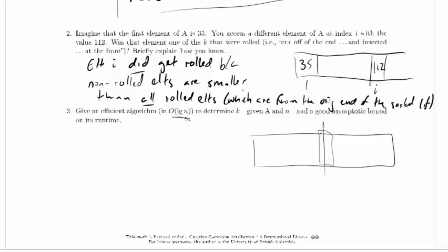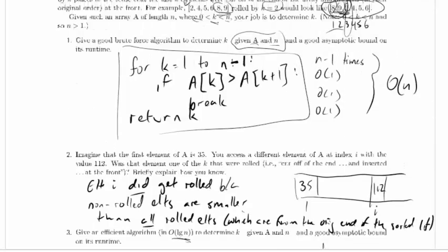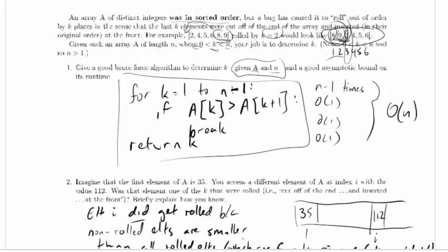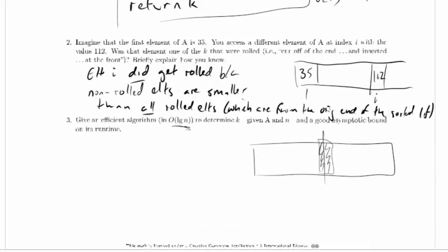One thing we could consider: is the element on the left of our probe greater than the element on the right of our probe? That's similar to the brute force algorithm. If we get lucky we've found the breaking point, but what if the right-hand one is larger than the left-hand one? Probing here — this will be larger than this before the roll point, and probing here, this will be larger after the roll point. So just checking if one's greater than the other doesn't really help us that much.